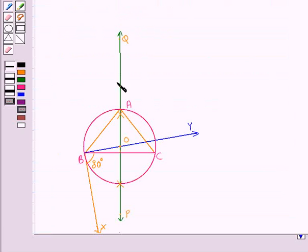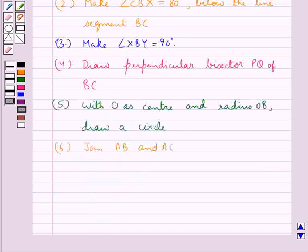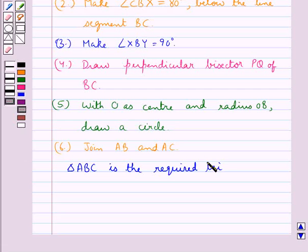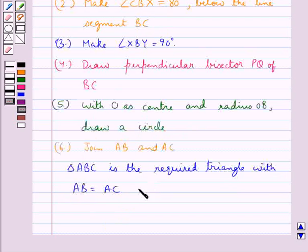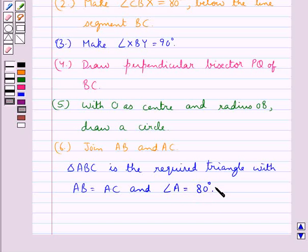So this triangle ABC is the required triangle with the side AB equal to the side AC. That is it is an isosceles triangle and angle A equal to 80 degrees. That is vertical angle is of measure 80 degrees.